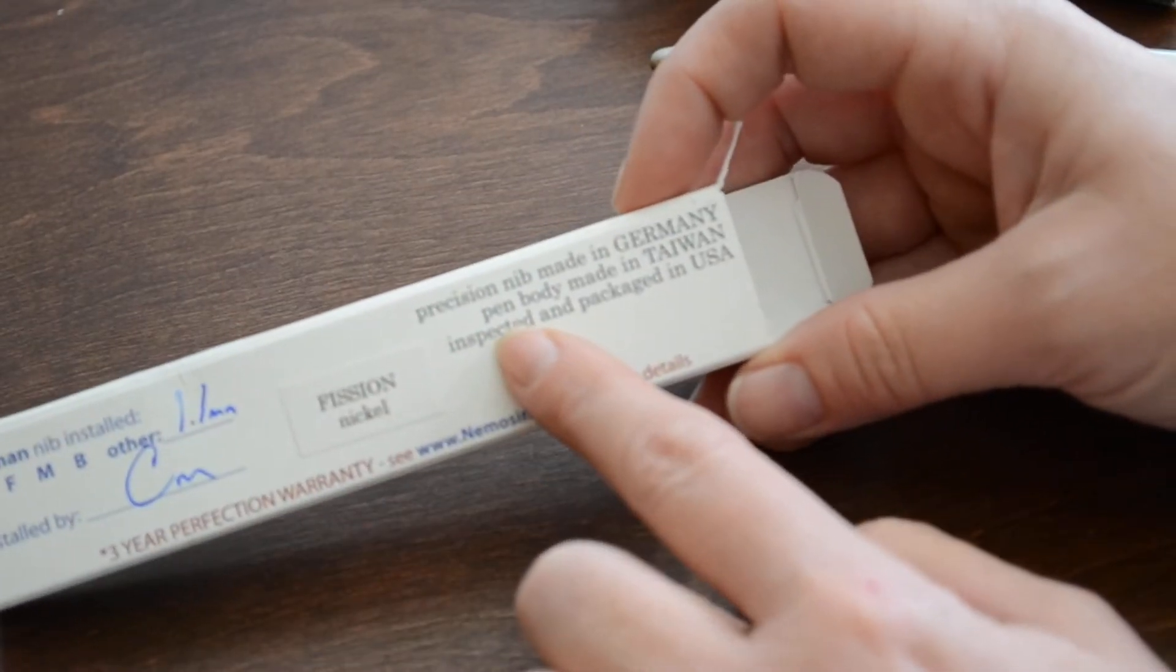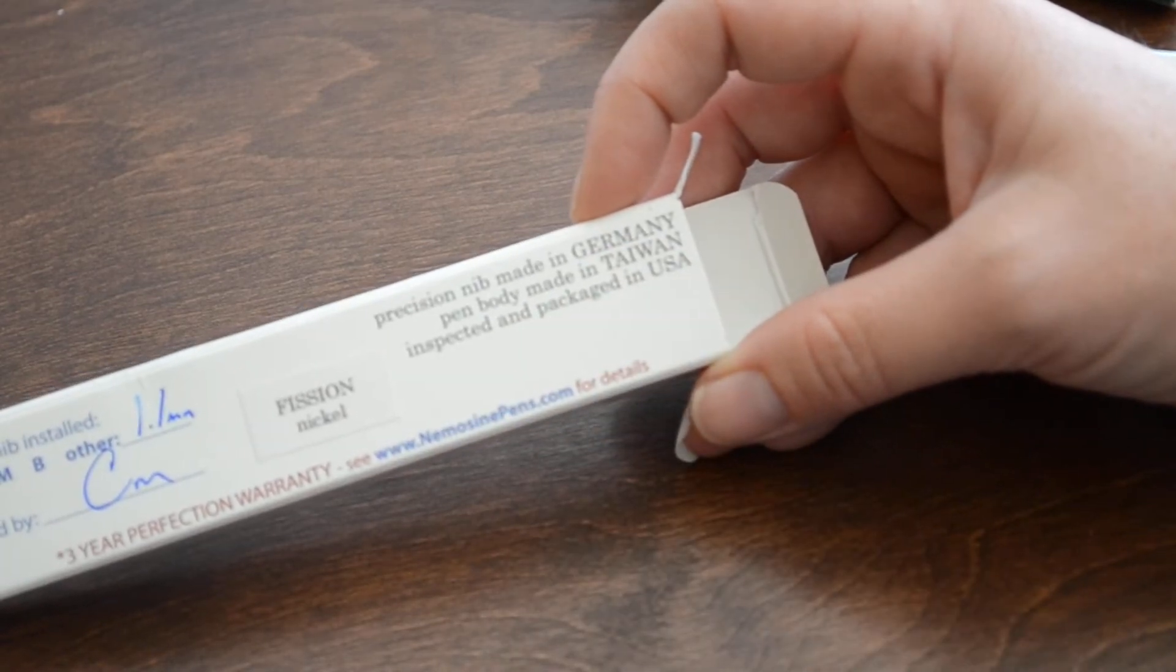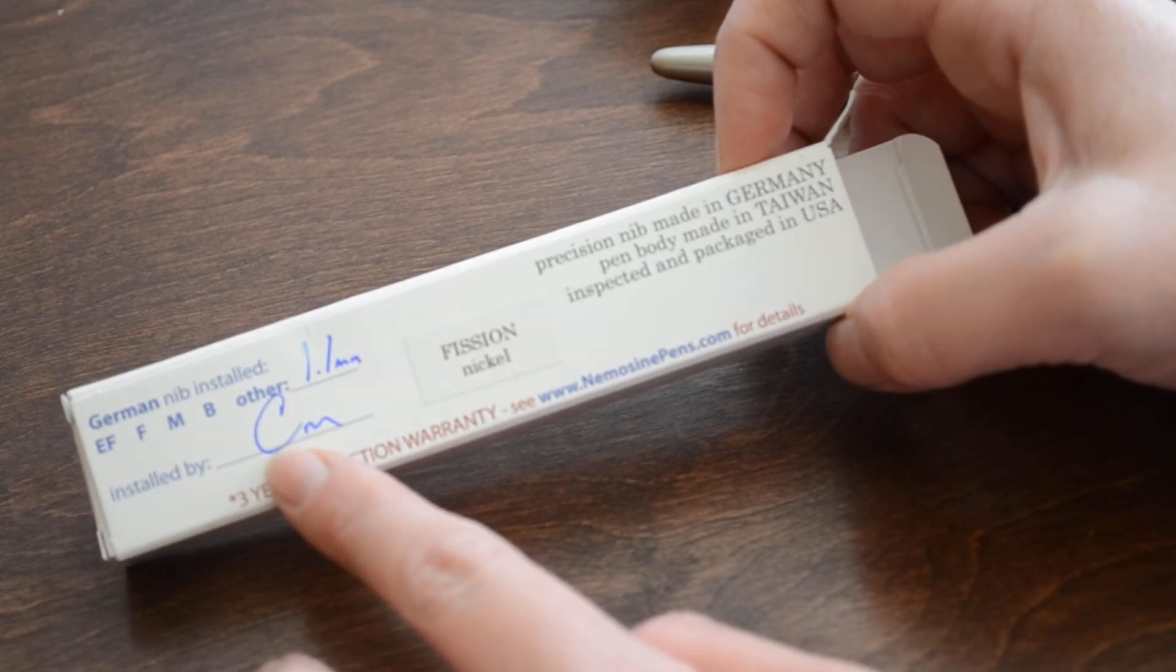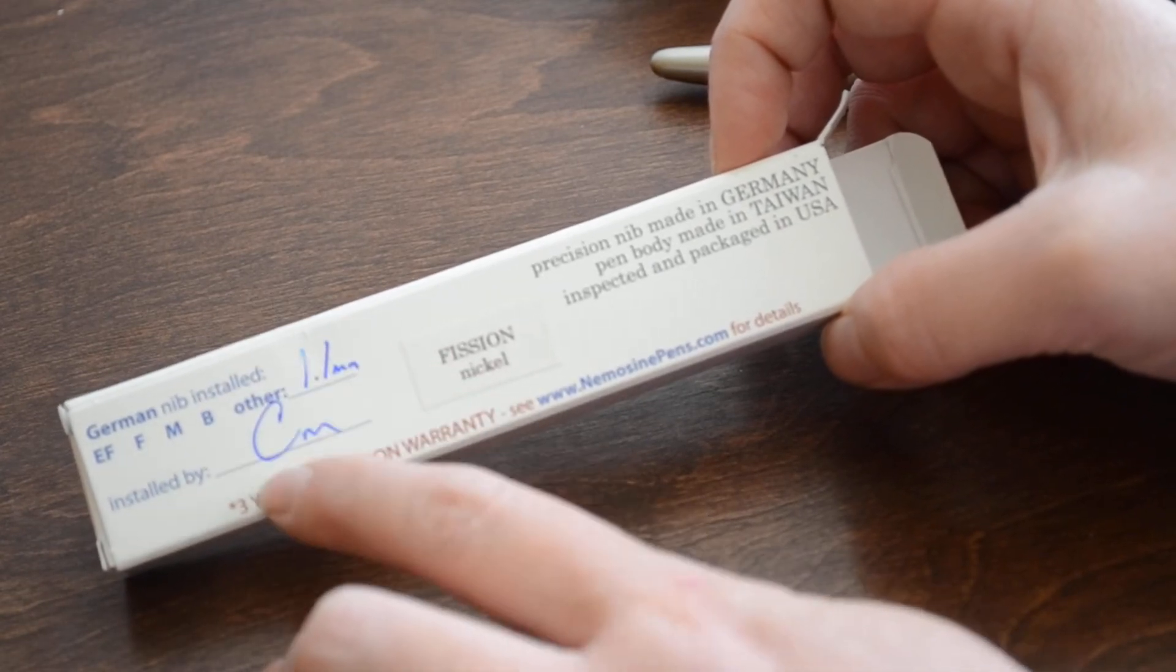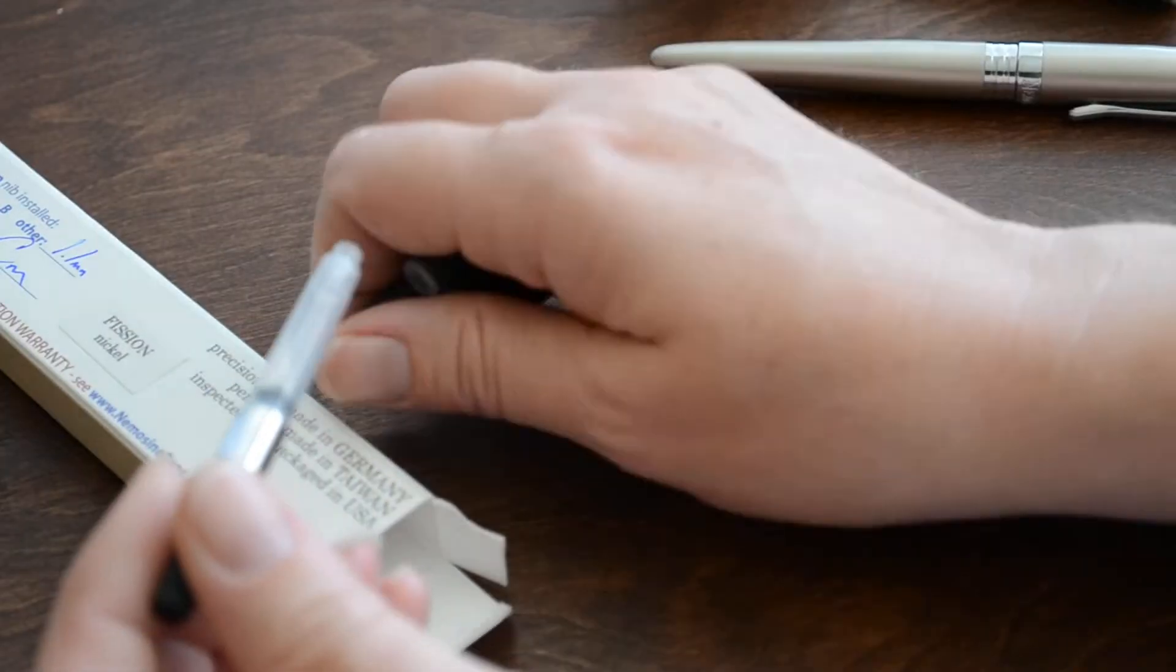I thought it was interesting that the nib is actually made in Germany. Pen body is made in Taiwan, inspected and packaged in the USA, and actually signed off by a real human being about what the nib size is, which is correct. This sticker is incorrect.